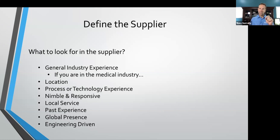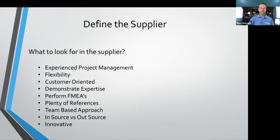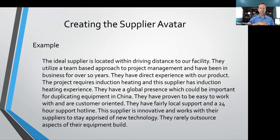Past experience matters — has your company worked with this supplier before, and what was that experience like? Was it a success, or did it not go well? Does the company have a global presence, and is that necessary for this application — for example, if you need to duplicate equipment in China? Also consider whether you need an engineering-driven company, or whether you want more of a standard process-type company as opposed to a custom engineered solution.